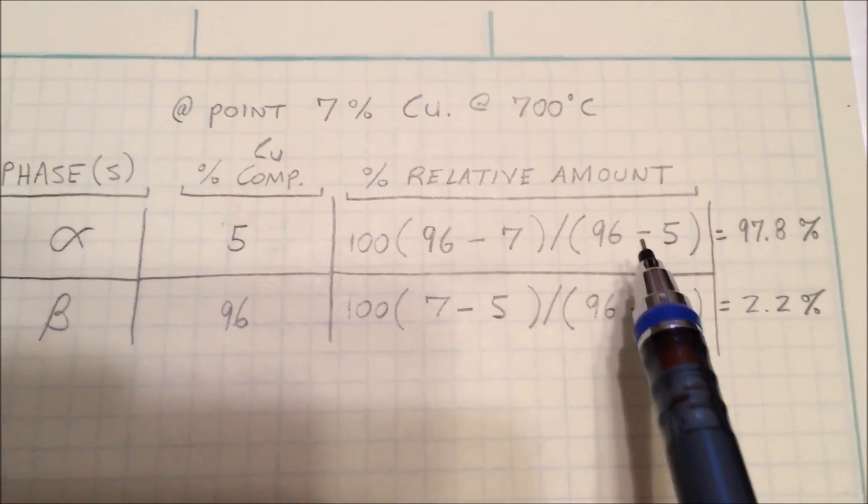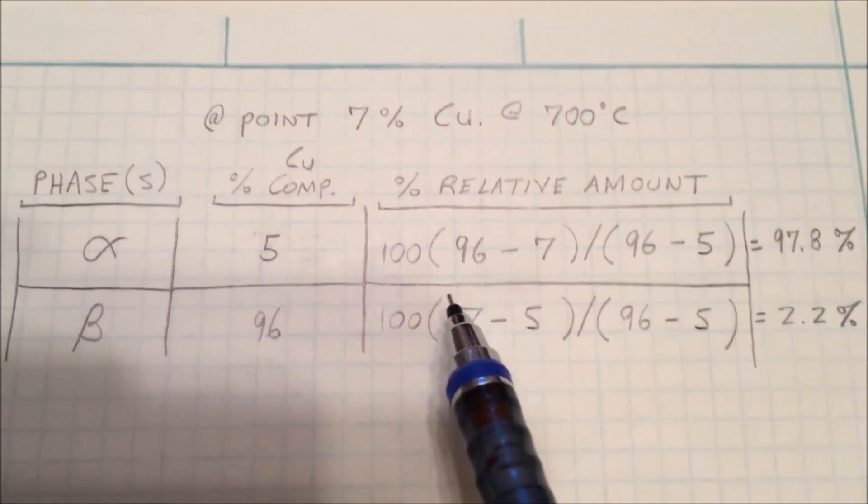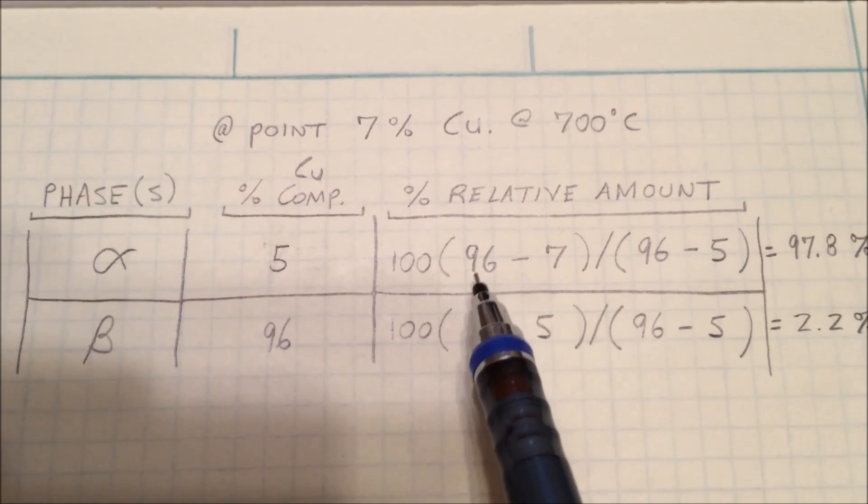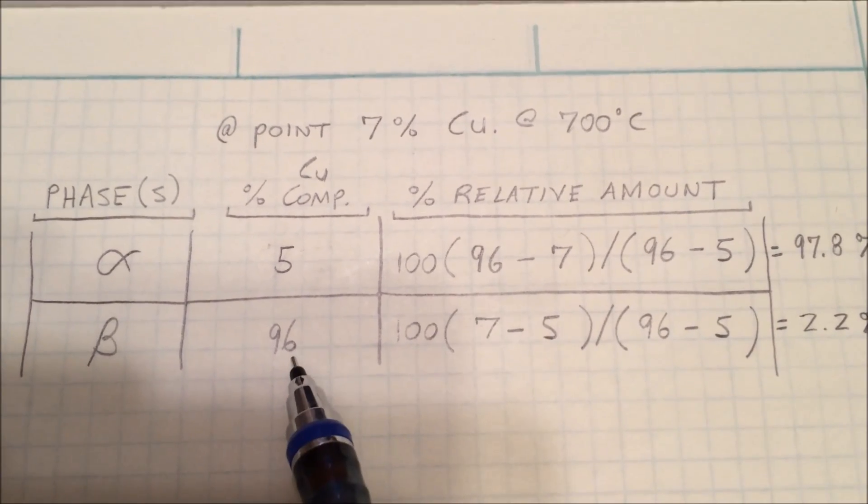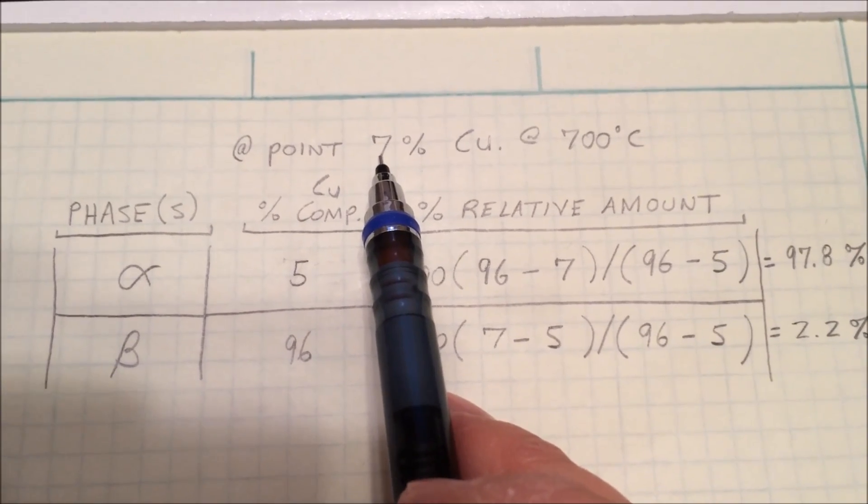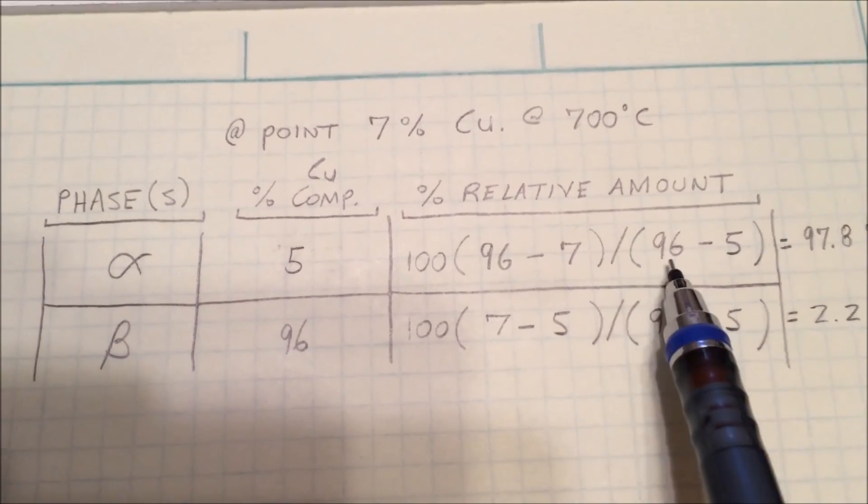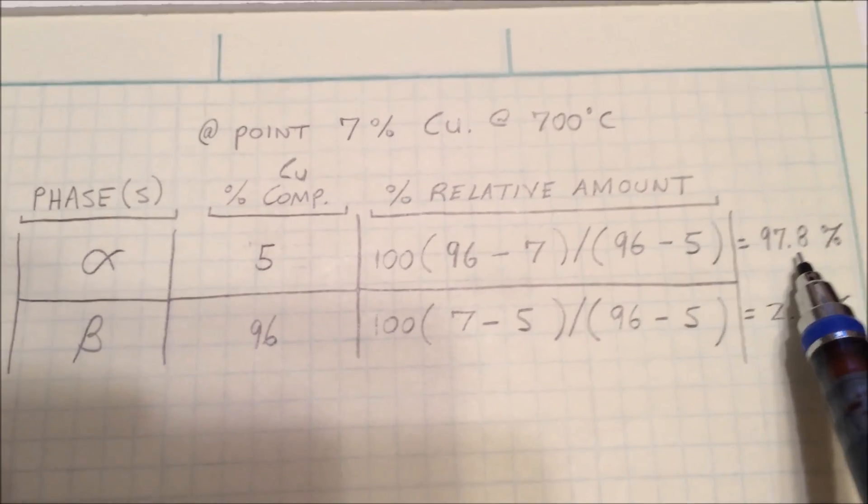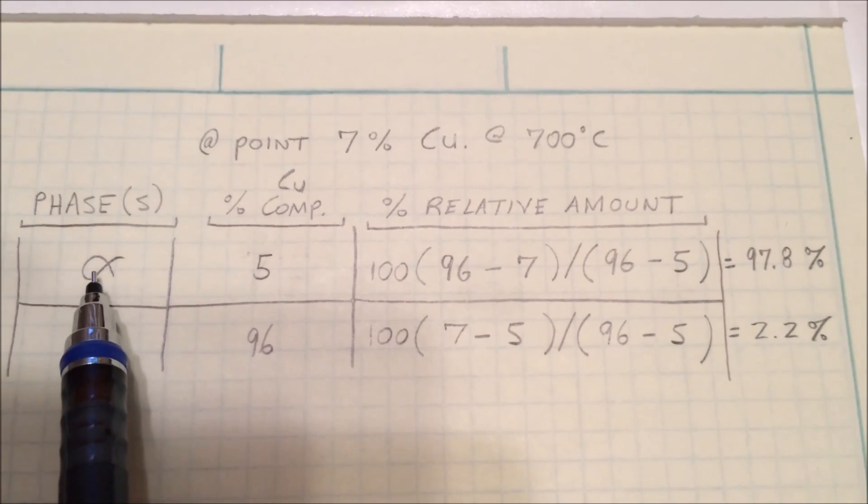The formula you use to calculate the relative amount is 100 times (this is for the percentage) 96, which is the percent beta, minus the percent point you started at, all divided by the difference, 96 minus 5. That gives us 97.8% alpha.